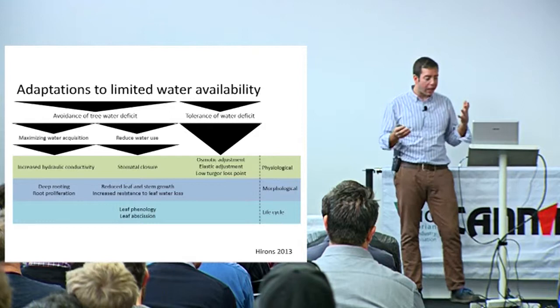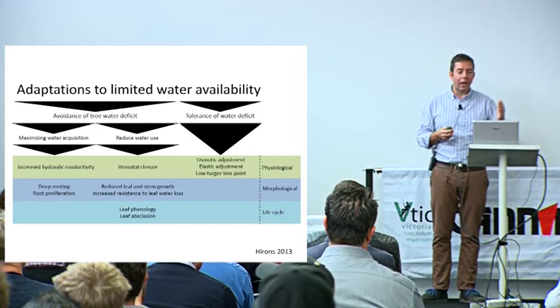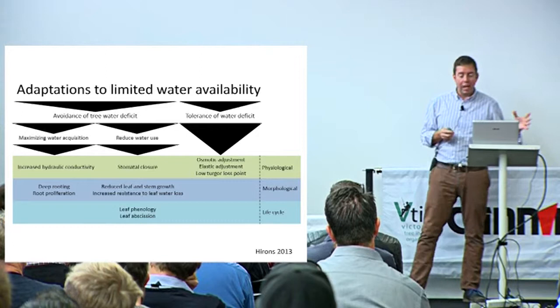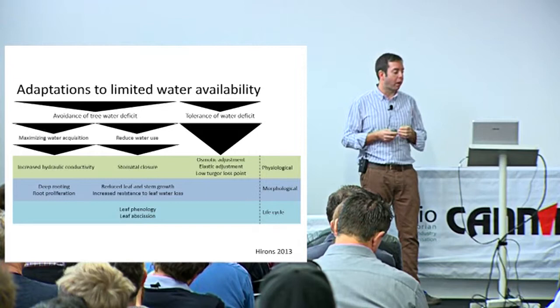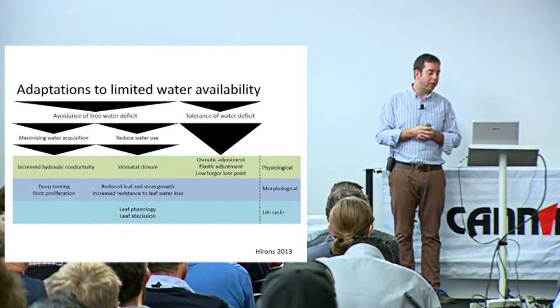Tolerance to water deficit includes things like osmotic adjustment, elastic adjustment, and having a physiologically low turgor loss point. All of those contribute to the ability of the tree to survive water deficit. We know quite a lot about how different species behave this way and how their characteristics are linked to their ecology - and that's what I mean by understanding the ecology of the tree and applying that into an urban context through fundamental biology.